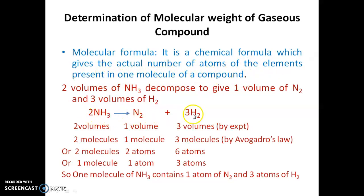Consider this example. Two volumes of ammonia on decomposition give you one volume of nitrogen and three volumes of hydrogen. It is by experiment.